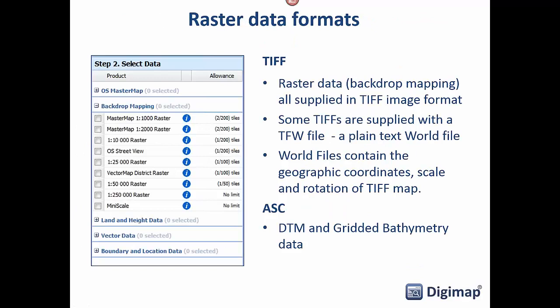For raster data, most of the raster datasets in Digimap are in TIFF format. Some TIFFs are supplied with a TFW world file that contains the location information for placing the TIFFs in your GIS, so multiple raster images from the same dataset will all align correctly. Some Digimap data has this information embedded in the TIFF header — these are called GeoTIFFs so they won't have world files but will still align nicely. The DTM and grid of bathymetry data from Marine Digimap come as ASC files — ASCII data essentially — but they still open well in QGIS.